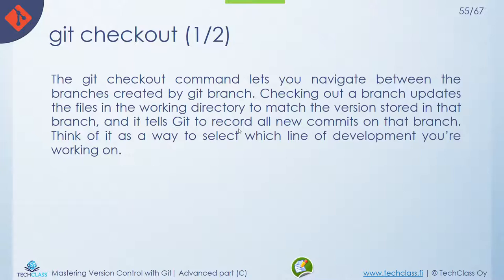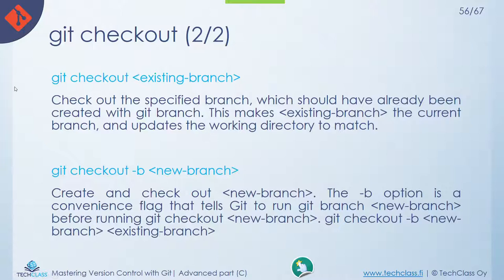Git checkout is a very important and interesting command — it lets you navigate between the branches created by git branch. Options: git checkout [existing-branch] — switches to that branch; git checkout -b [branch-name] — creates a new branch AND checks out to it. That is the key difference from git branch alone: git checkout -b both creates and immediately switches to the new branch.